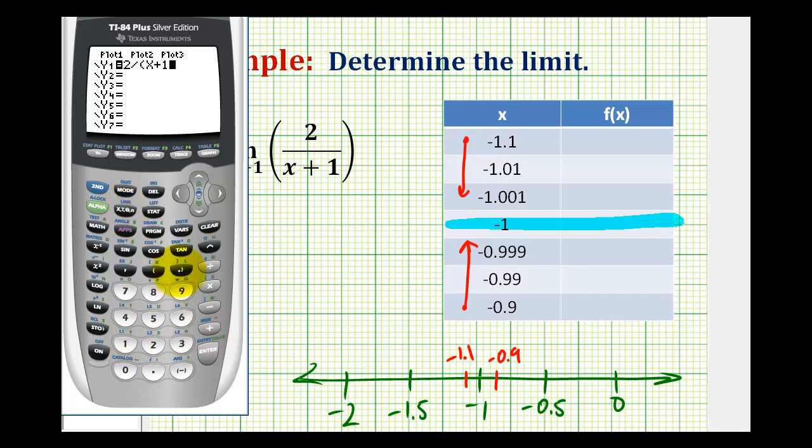If we leave off the parentheses here, it would not be the same function. And now we're going to make sure that our table set is on ask mode. So if we press second window, make sure that your calculator is highlighted here on ask. If it isn't, we just go down, highlight ask, and then press enter.